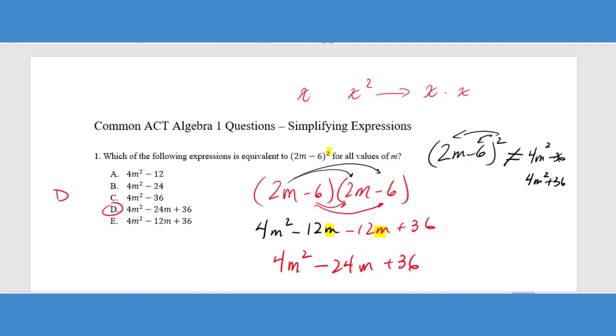If you look at the answer choices, they will try to bait you into that answer choice if you don't remember the rules appropriately. So this is a very good ACT problem that you will see how they test you on foiling in this case.